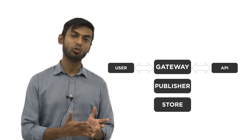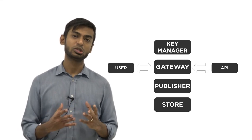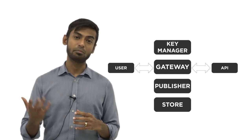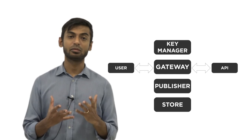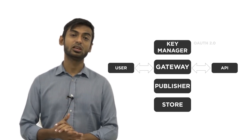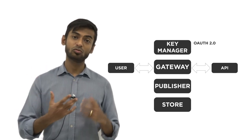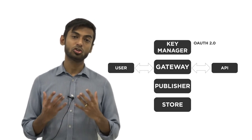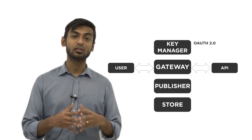This brings us to the next component: the Key Manager. The Key Manager is responsible for issuing the credentials required to access a given API, and also for validating the credentials sent along with API calls intercepted by the API Gateway. The primary means of authentication used by the Key Manager is OAuth 2. When a user subscribes through the store to a particular API, the Key Manager will issue an OAuth access token, which the user can then use to send along with their API invocations.